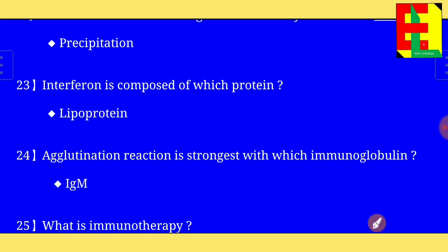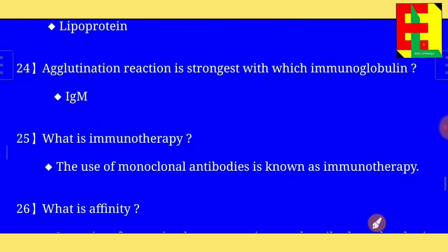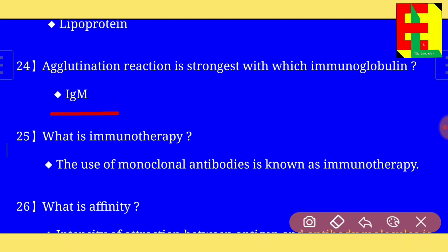Question number twenty-four: agglutination reaction is strongest with which immunoglobulin? The right answer is: agglutination reaction is strongest with IgM immunoglobulin.